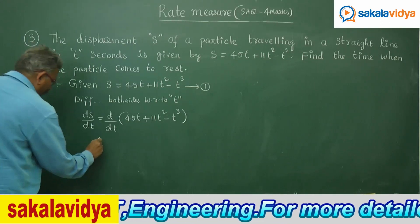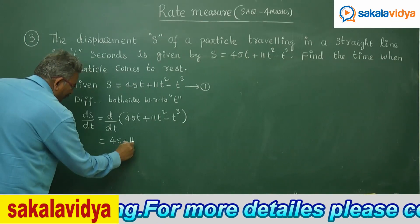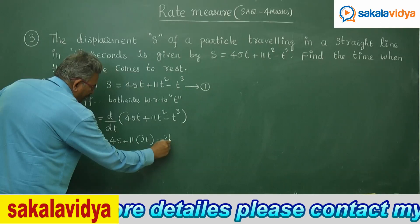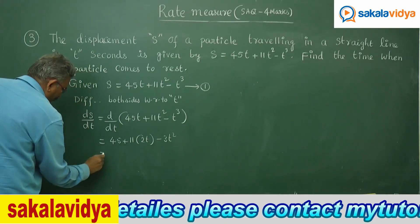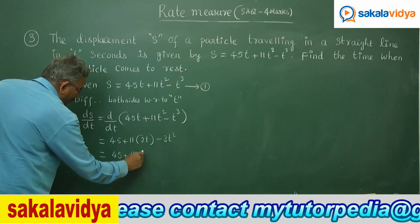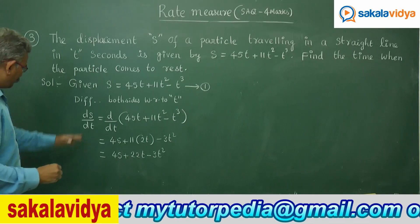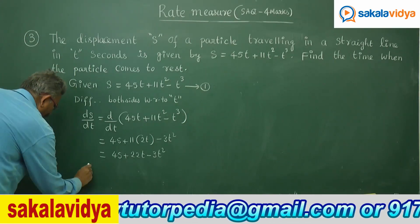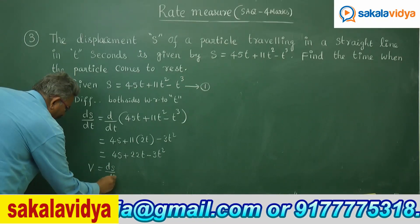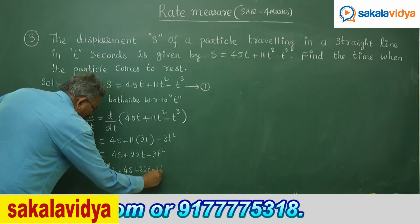dS/dt = d/dt of (45t + 11t² - t³). The differentiation gives: 45 × 1, plus 11 × 2t, minus 3t². Simplified, this is 45 + 22t - 3t². So v = dS/dt = 45 + 22t - 3t².